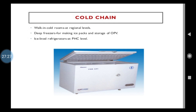Various cold chain equipment is used, including walk-in cold rooms at the regional level, deep freezers for making ice packs and storage of vaccines including oral polio vaccines, ice-lined refrigerators at the primary health center level, cold boxes, vaccine carriers, ice packs, and refrigerator freezers. These equipments are necessary for proper storage of vaccines until they are given to individuals at the required temperature, also protected from light.